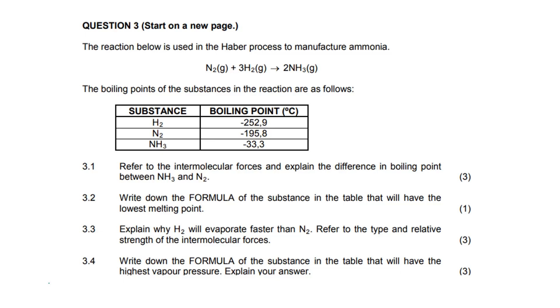Hi guys, let's take a look at this question. They give us the reaction that is used in the Haber process to manufacture ammonia, and they give us the various boiling points of the substances that are used in that reaction. We have hydrogen, nitrogen and ammonia.